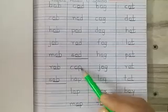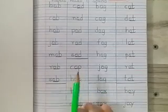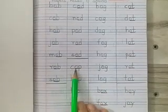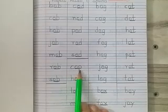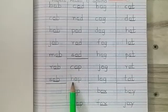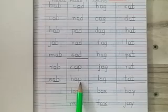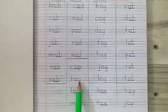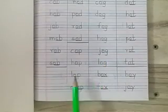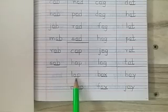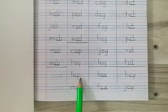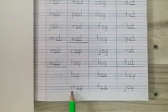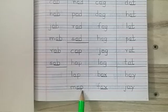We are going to start with OP words. C says C, O says O, P says P — Cop. H says H, O says O, P says P — Hop. L says L, O says O, P says P — Lop. M says M, O says O, P says P — Mop.